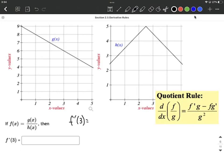The derivative of our function is going to be the derivative of the numerator, so g is our numerator evaluated at 3, multiplied by the denominator, ours is h, evaluated at 3, minus the numerator, g,